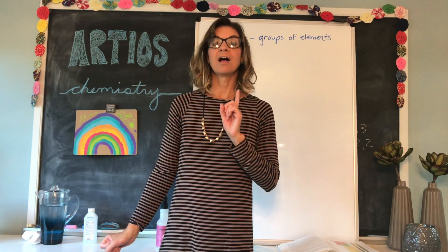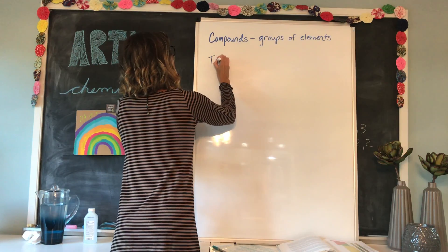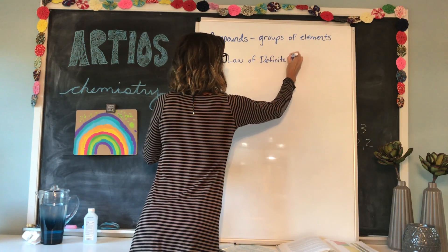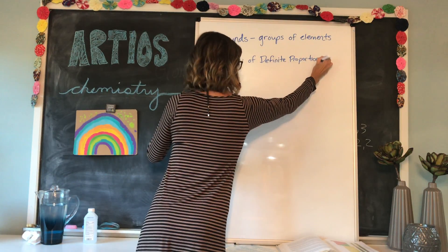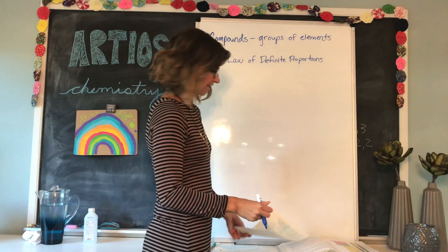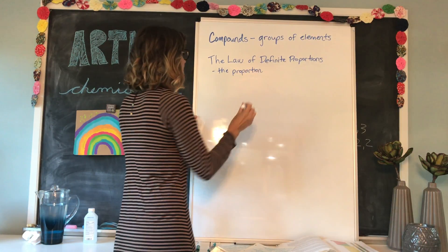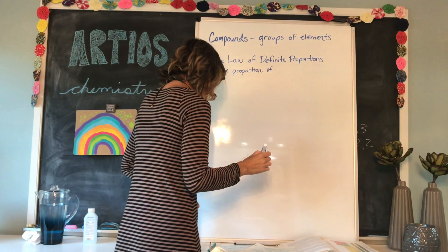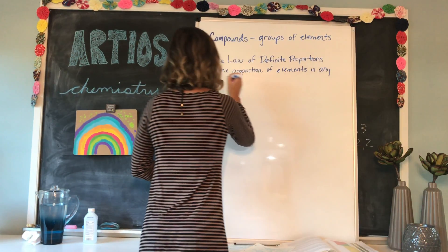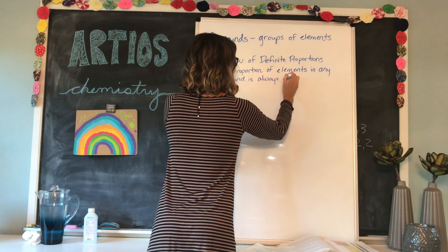A scientist came up with the rule of definite proportions — that elements must combine in specific proportions — and it is called the law of definite proportions. The law of definite proportions says that the proportion of elements in any compound is always the same.